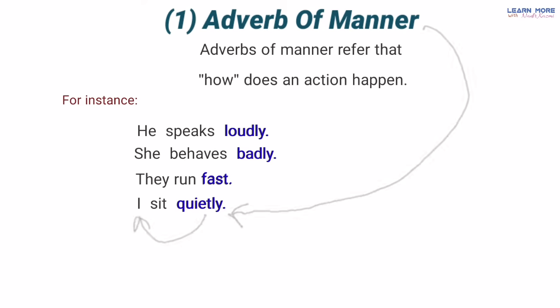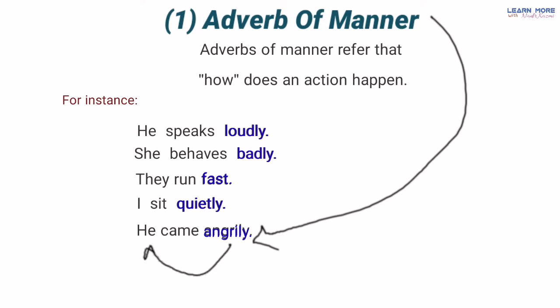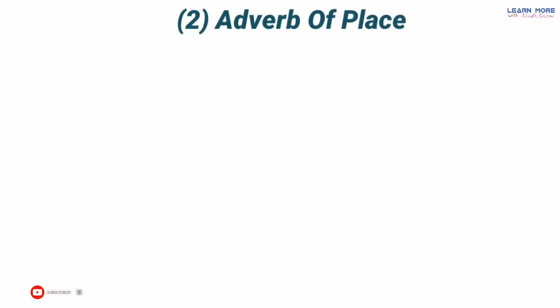'How did he come?' — woh kis tarah aaya? 'He came angrily' — woh gusse mein aaya. Ab word 'angrily' bhi ek adverb of manner hai kyunke yeh uske andaaz, manner ke baare mein bata raha hai ke woh kaise aaya, kis tarah aaya — angrily, gusse mein.